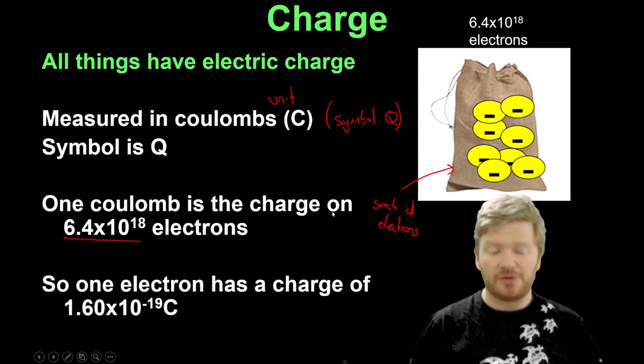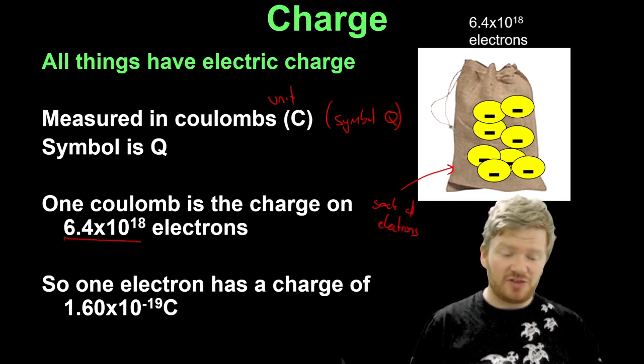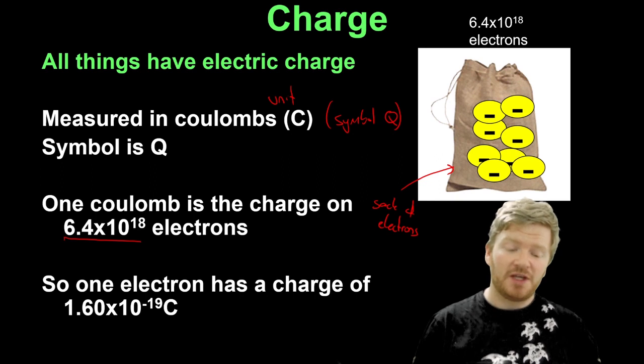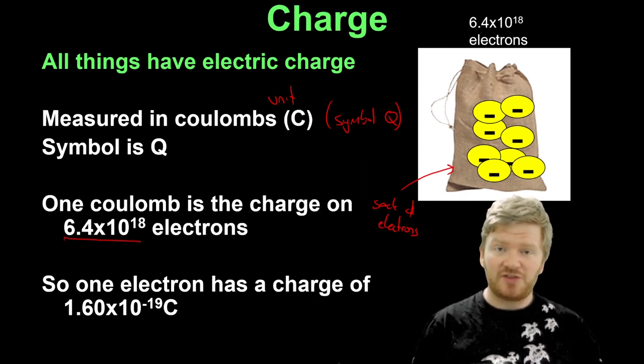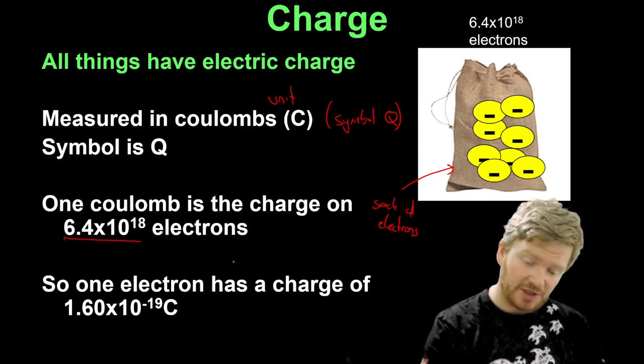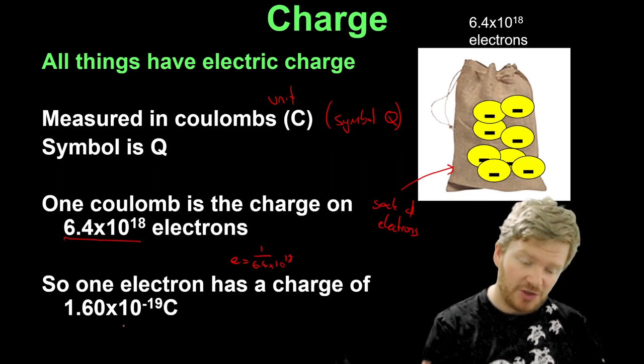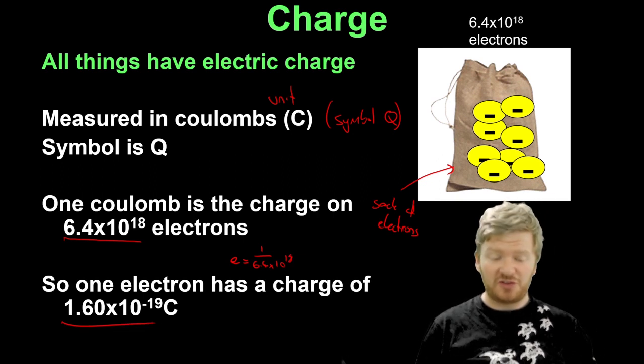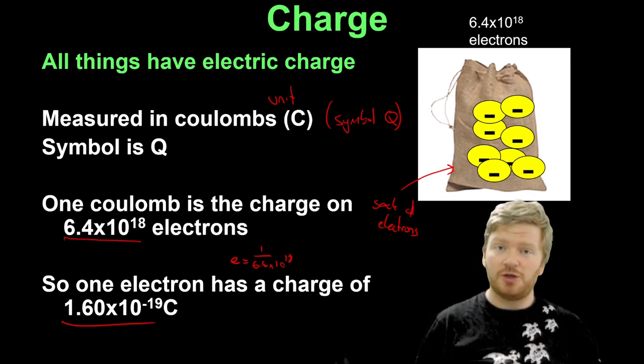That's something that we did quite a lot about at IGCSE. But what we have done a little bit less on is this idea that if one Coulomb is 6.4 times 10 to the 18, then one single electron will have a charge of 1 divided by that. So we use the symbol E for the electron charge, that is 1 over 6.4 times 10 to the 18. And when you do that, you find the charge of a single electron is 1.60 times 10 to the negative 19 Coulombs.